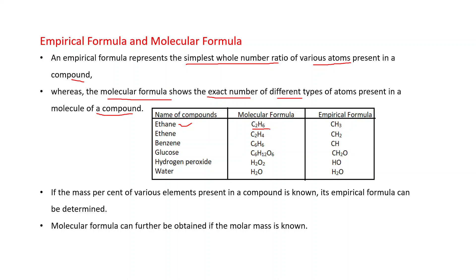If we find the simplest ratio of carbon to hydrogen atoms in ethane, it is 1:3, so the empirical formula is CH₃. Similarly, ethene has molecular formula C₂H₄ and empirical formula CH₂. Benzene has molecular formula C₆H₆ and empirical formula CH. Glucose has molecular formula C₆H₁₂O₆ and empirical formula CH₂O. Hydrogen peroxide has molecular formula H₂O₂ and empirical formula HO. For water, both the molecular formula and empirical formula are H₂O, because the exact ratio of hydrogen to oxygen (2:1) is already the simplest ratio.